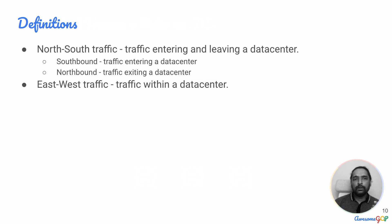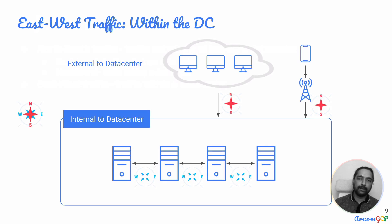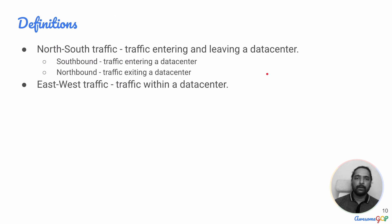A little more detail on north-south traffic: you might even hear terms like southbound traffic, which would be traffic entering the data center, and northbound traffic, which is traffic exiting a data center. So north-south traffic encompasses both southbound and northbound, and then there is east-west traffic.